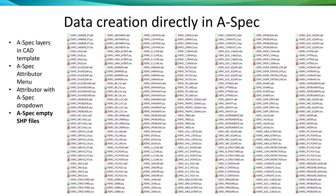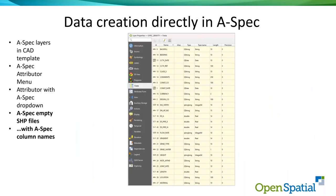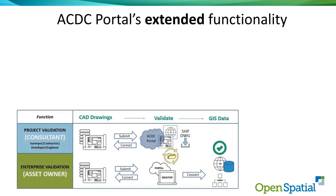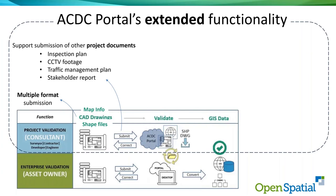Creating data directly in ASPEC — here are all the empty shapefiles. You can see all the various files. You can, for example, in QGIS, set up all of the information. Around the portal in terms of extended functionality: multiple format submissions. You can submit AutoCAD or BricsCAD drawings — any version on the market. You can also do shapefiles, as well as MIF/MID files from tomorrow, which you'll be able to submit as well.